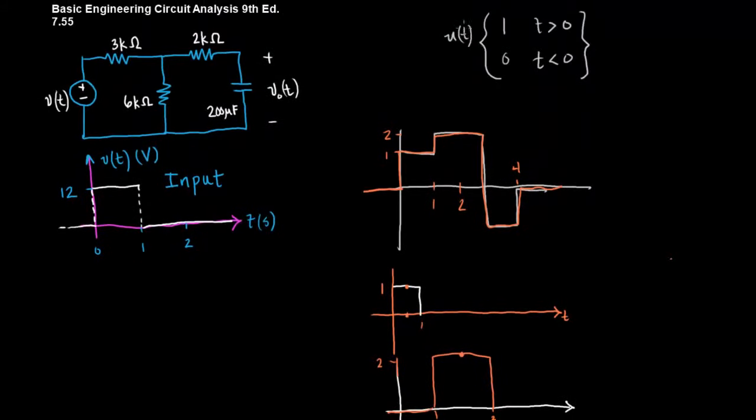And let's define the unit step first. The unit step is u of t such that the output is one if t is greater than zero and it's zero if t is less than zero.